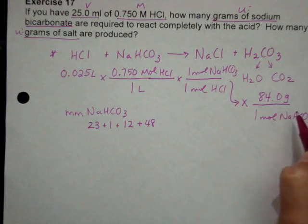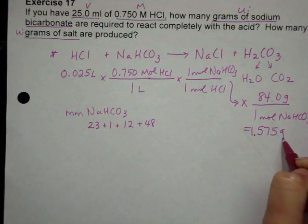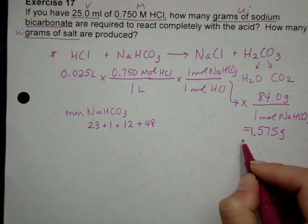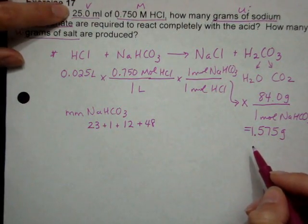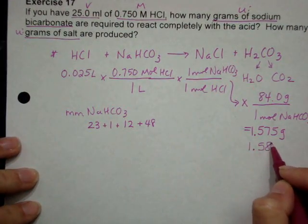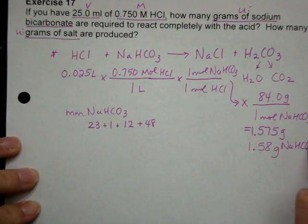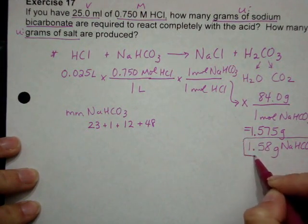And that gives me, then, 1.575 grams, which I should probably then round. I only have three sig figs and three sig figs, so it would be pretty safe to round to three sig figs, as usual. 1.58 grams of sodium bicarbonate.